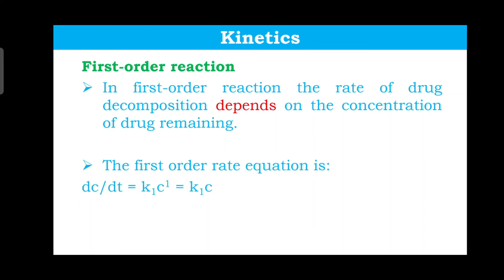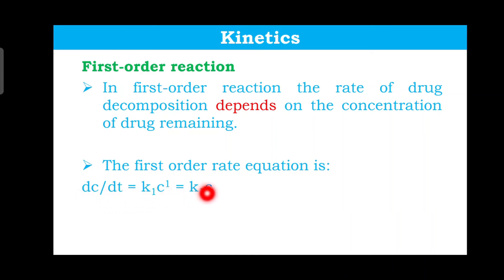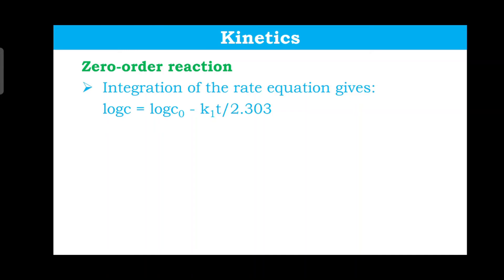The first order rate equation from the general expression is dc/dt equals k times C to the power one. The rate constant for first order is given as k₁, unlike k₀ for zero order. Since C raised to the power one is simply C, the equation becomes dc/dt equals k₁C. Compare this to zero order: dc/dt equals k₀.